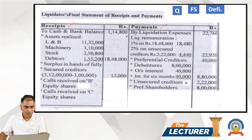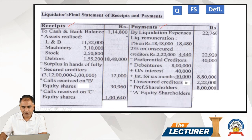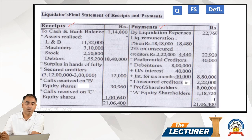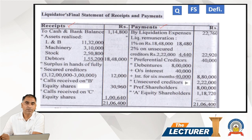Call from B and call from C go under receipts, and the payment to A goes under payments. Once totals are matched, the account balances. This completes the liquidator's receipts and payments account. Thank you.